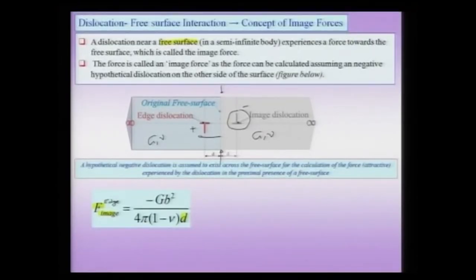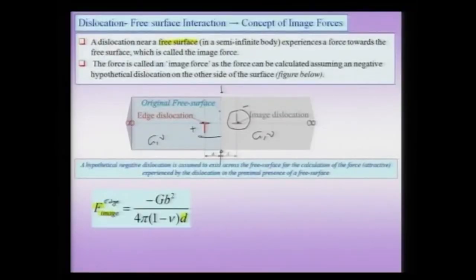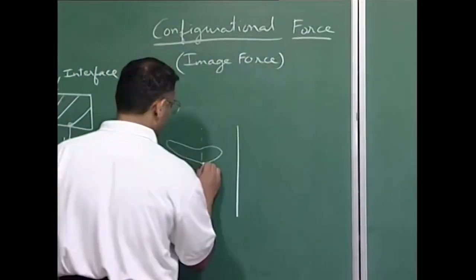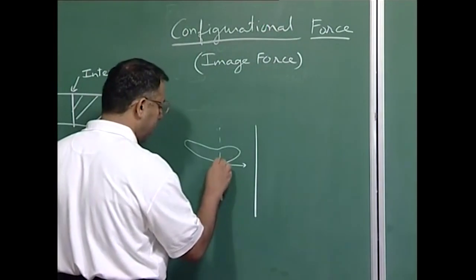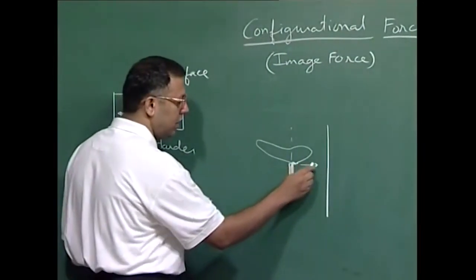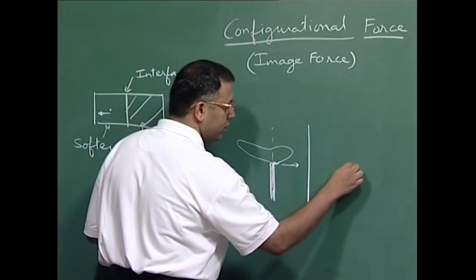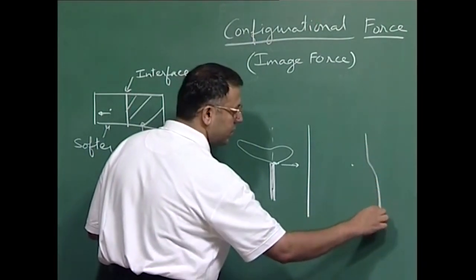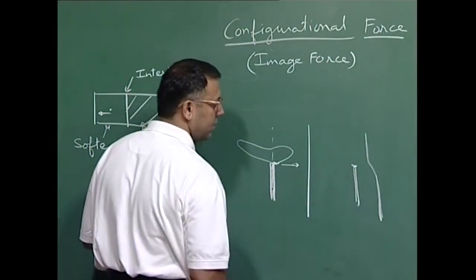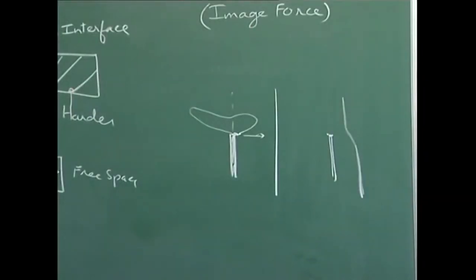Dislocations can interact with free surfaces and interfaces with harder or softer materials. If the image force exceeds the Peierls stress, the dislocation would automatically leave the crystal and settle on the surface. As a dislocation approaches the free surface it can also distort the free surface. The image force goes as 1/d, meaning it grows asymptotically as the dislocation approaches the free surface.